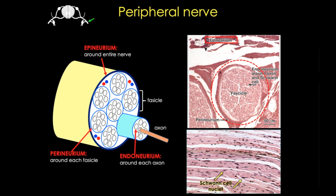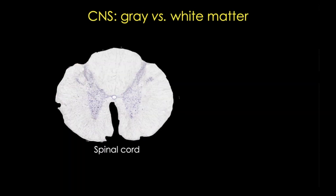Now let's move on to the CNS. The CNS has two main components based on where neuronal cell bodies are found: gray and white matter. Here I've shown a transverse section of the spinal cord stained with Nissl stain, which stains rough endoplasmic reticulum and DNA and RNA. This marks the gray matter, which contains neuronal cell bodies, dendrites, and synapses. White matter contains axons, both myelinated and unmyelinated, and only a few cell bodies. Because there are so many axons in myelin, this area appears white in fresh specimens. Both white matter and gray matter contain astrocytes, oligodendrocytes, and microglia.